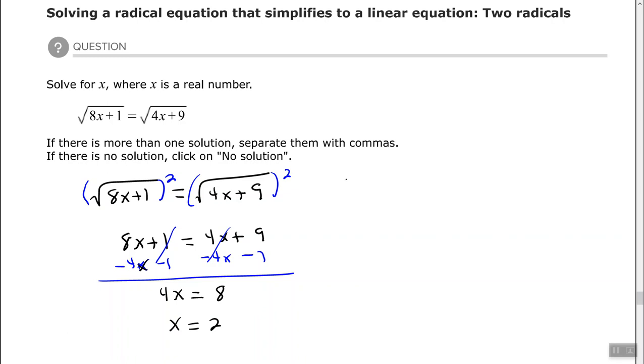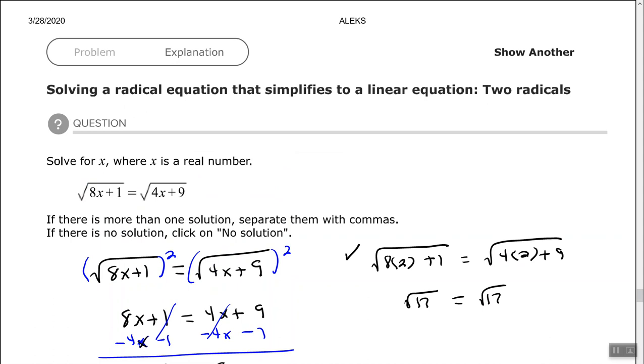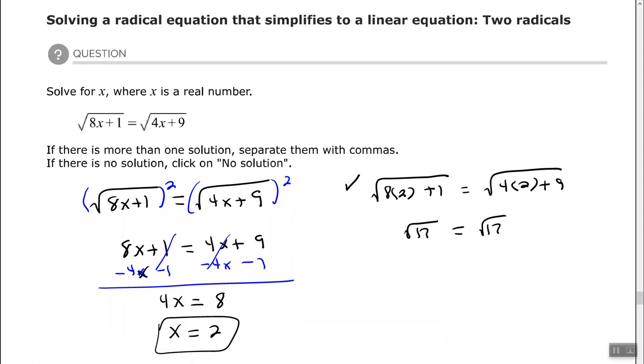Check your answer: 8 times 2 is 16, plus 1 is 17, so the square root of 17. And 4 times 2 is 8, plus 9 equals the square root of 17. That's true, it checks out. x equals 2. I hope you found this video helpful. Thank you.